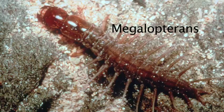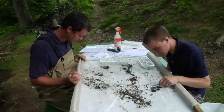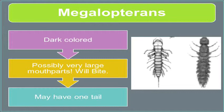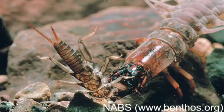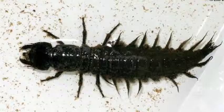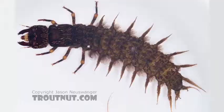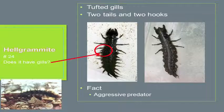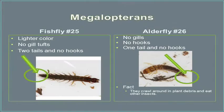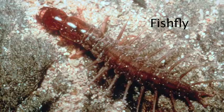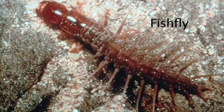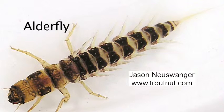Megalopterans are another group we find fairly frequently while sampling streams. There are three main types. If you have something scary-looking in your net, first figure out whether it has gills on its underside. All of these might curl up on you, making it difficult, but if you leave them alone, you may notice pulsating gills on the underside — if you have gills, you have a hellgrammite. If you don't have gills, you either have a fishfly or an alderfly. The fishfly has two tails coming off the end, and the alderfly has just one long thin tail.